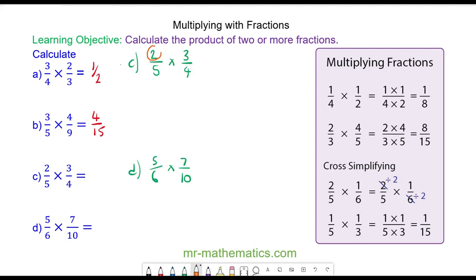You can see we can cross-simplify the two and the four by dividing both by two, and the three and the five don't cross-simplify. So we have two divided by two which is one, over five, multiplied by three over four divided by two which is two — giving us three over ten.